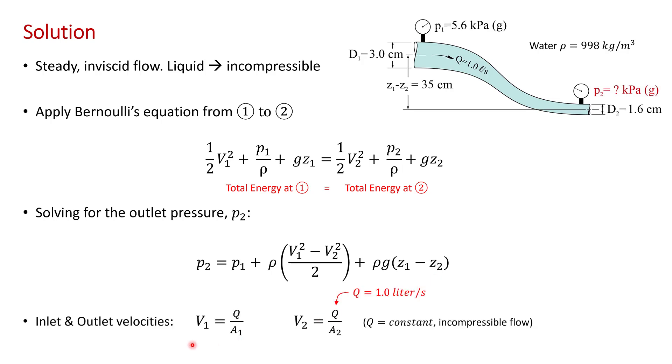We can also easily calculate the inlet and outlet velocities from the volume flow rate in the tube, which is 1 liter per second. The flow is incompressible, so the volume flow rate Q will be a constant.